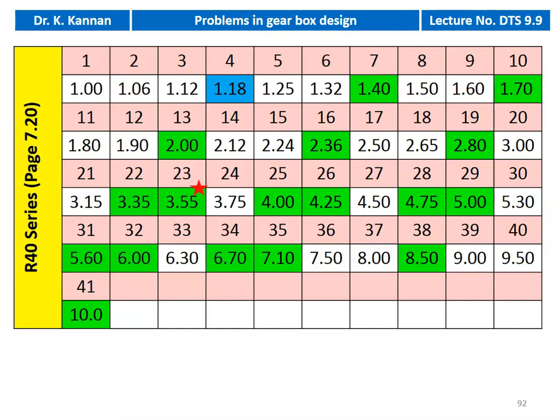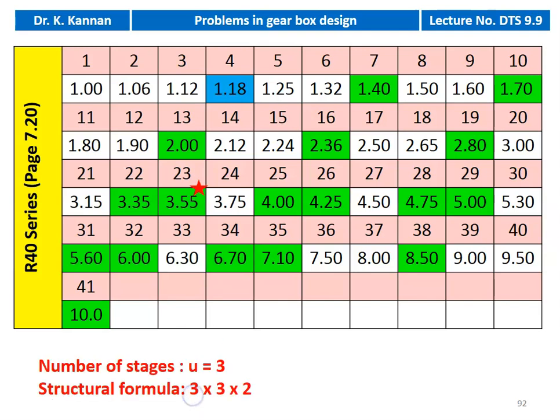These are all 18 speeds taken from the R40 series for progression ratio 1.18. The number of stages equals 3, so we have a 3-stage gearbox and the structural formula is 3×3×2. In the first stage there are 3 output speeds, in the second stage 3×3 = 9 output speeds, and in the third stage 9×2 = 18 output speeds.